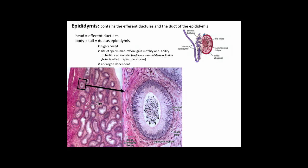The epididymis contains the efferent ductules and the duct of the epididymis. The head contains the efferent ductules, while the body and tail constitute the ductus epididymis and are highly coiled. This is a site of sperm maturation — sperm gain motility here and gain the ability to fertilize an oocyte. Surface-associated decapacitation factors are added to the sperm membrane, and these processes are dependent on androgens.